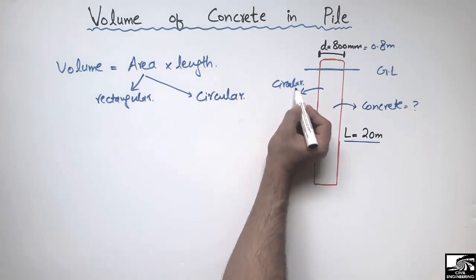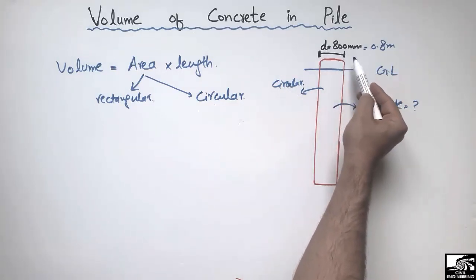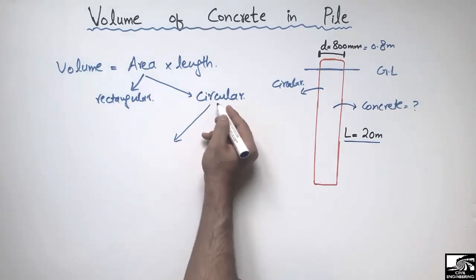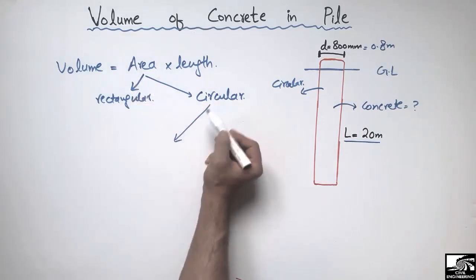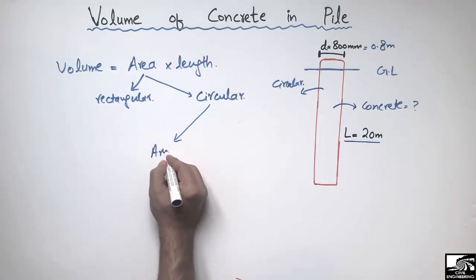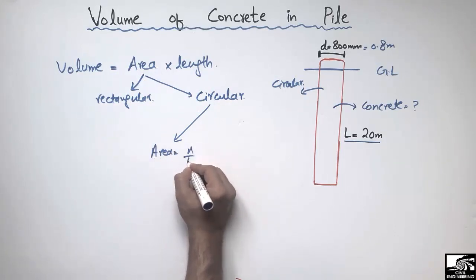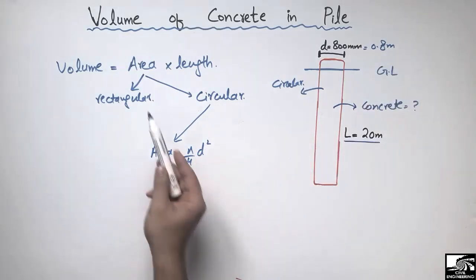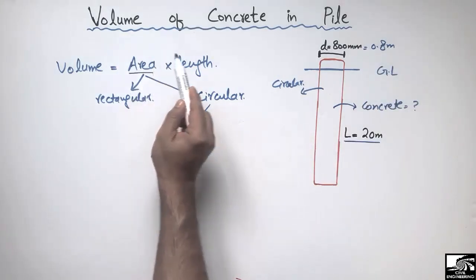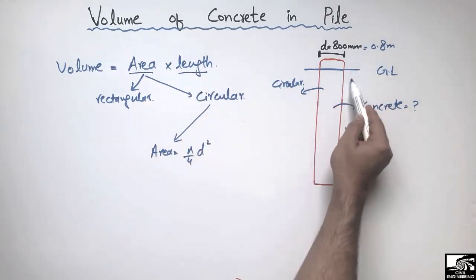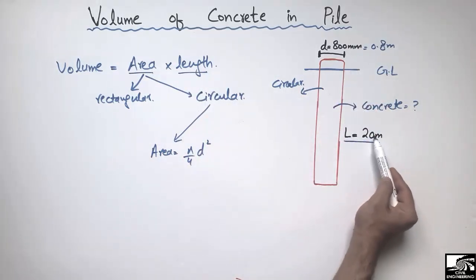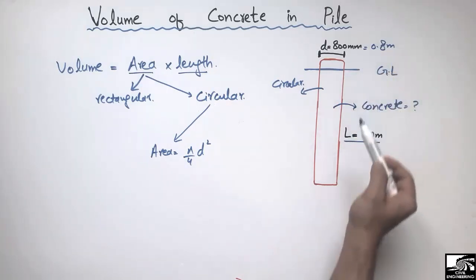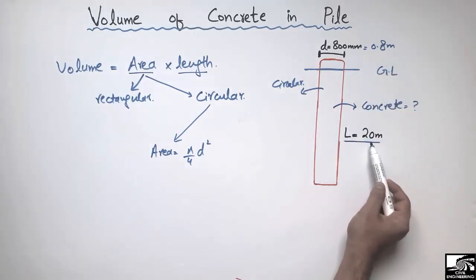This pile is a circular pile, and the diameter of this pile is given as 800 millimeters or 0.8 meters. The area of a circular pile is equal to π/4 × d², where d is 0.8 meters here. The length of the pile is given as 20 meters.